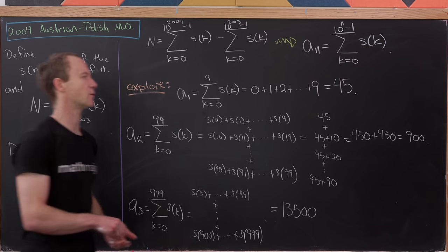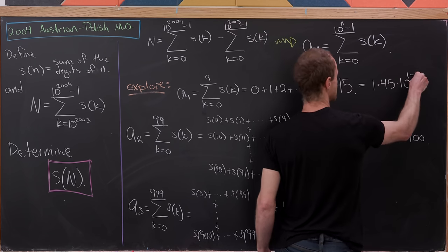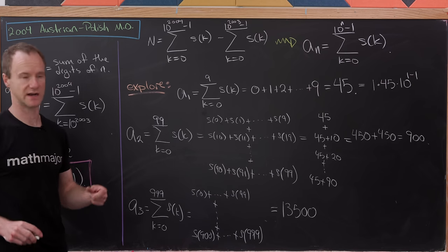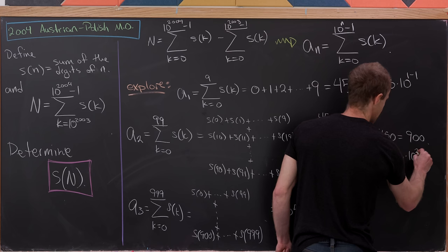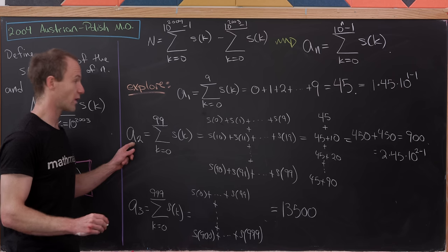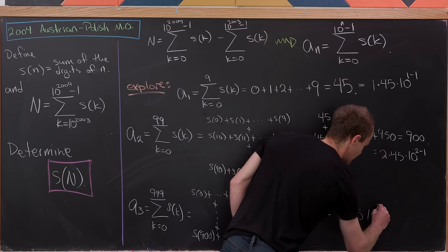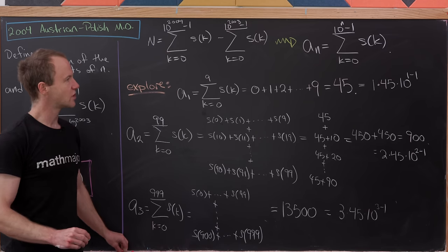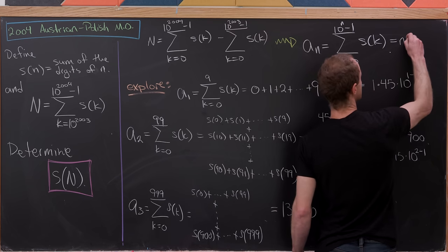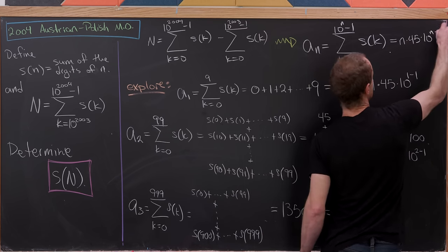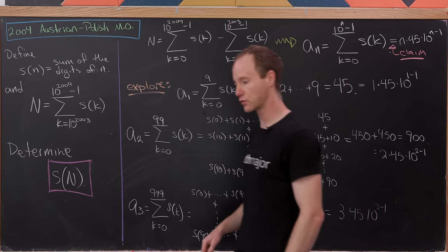Looking at these values more carefully: A_1 = 1 × 45 × 10^0, A_2 = 2 × 45 × 10^1, A_3 = 3 × 45 × 10^2. The pattern suggests that A_n = n × 45 × 10^(n−1). We'll make this our claim and prove it by induction on the next board.